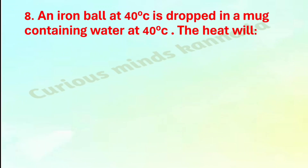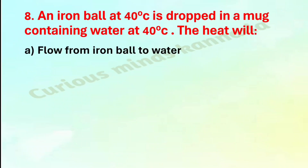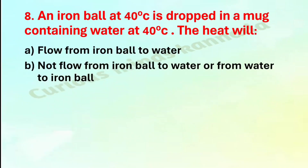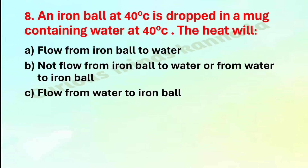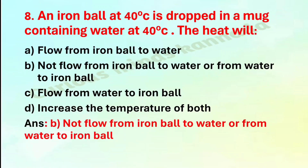Eighth question: an iron ball at 40 degree Celsius is dropped in a mug containing water at 40 degree Celsius. The heat will — option A: flow from iron ball to water, B: not flow from iron ball to water or from water to iron ball, C: flow from water to iron ball, D: increase the temperature of both. Correct answer is option B: not flow from iron ball to water or from water to iron ball.